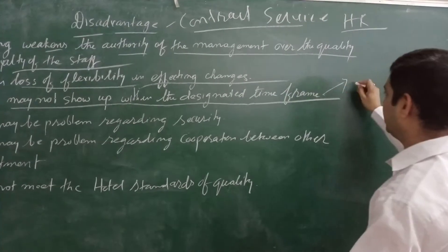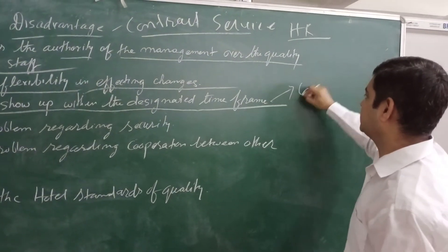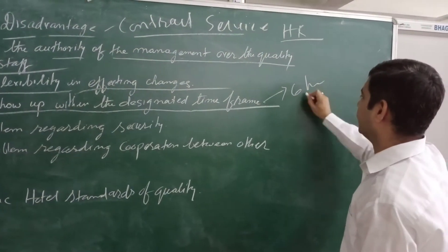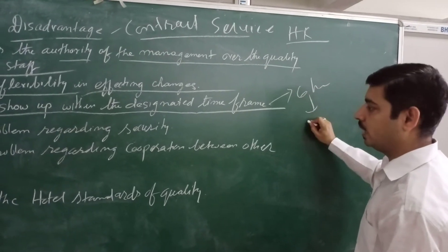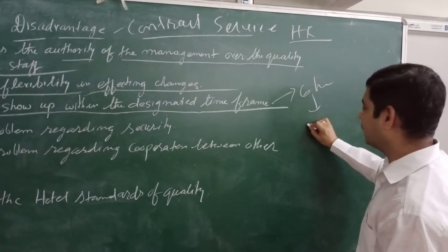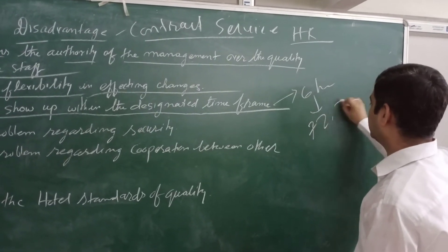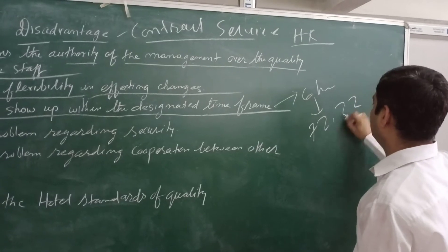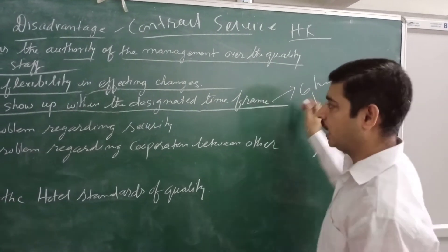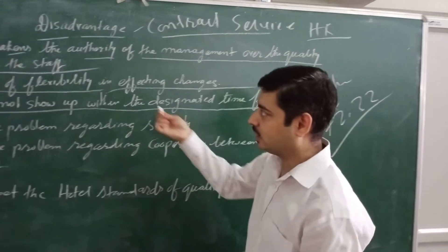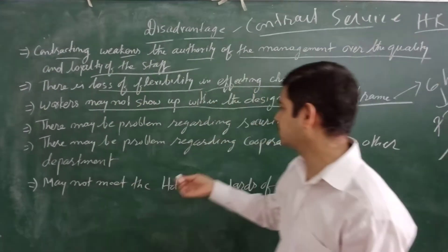Suppose I require anything within 6 hours — maybe the contractor will take 72 hours or 32 hours to get the same work done. And that is a disadvantage of the contract service.